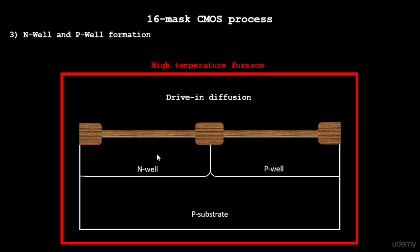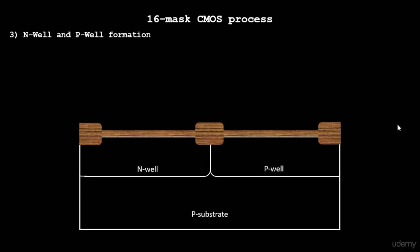Why is it called twin tub? You can consider this as one of the tubs and this is another tub. There are twin tubs in which, in this particular N-well, we're going to create a PMOS transistor. In the P-well, we're going to create an NMOS transistor. This is the first step towards creating the pockets that we talked about in the previous lecture.